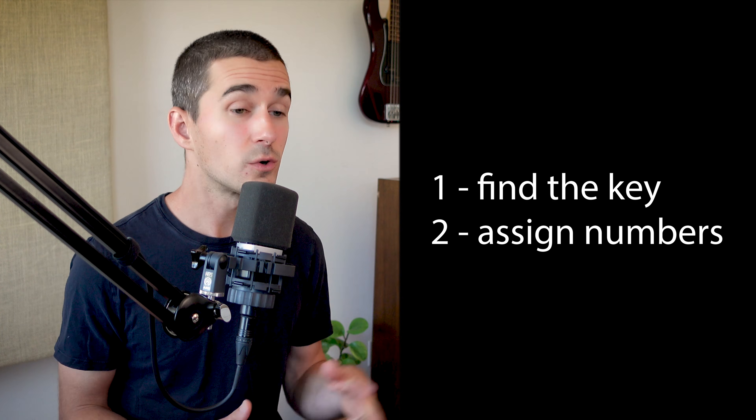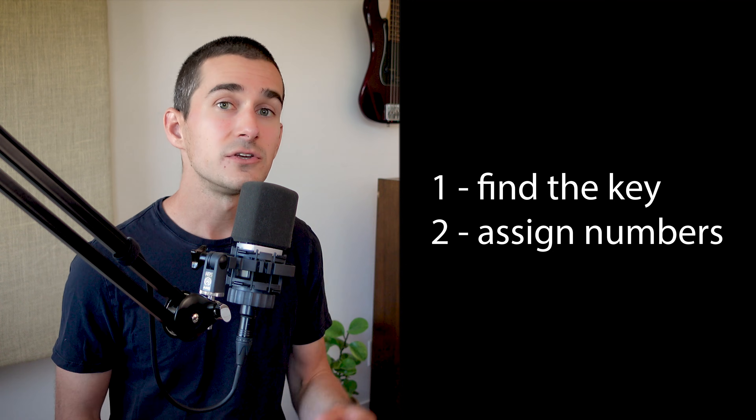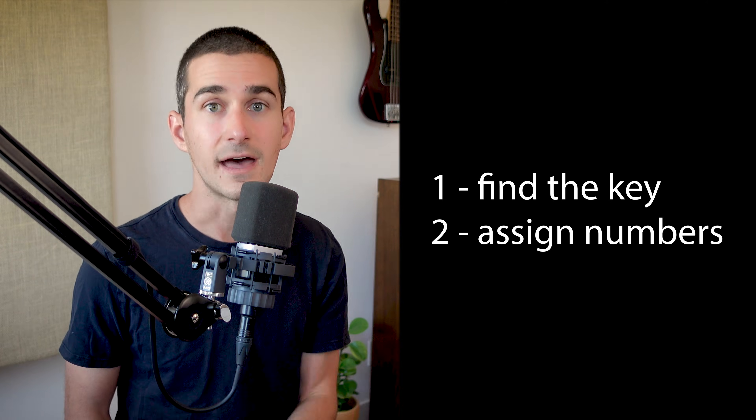One, four, five, and six are by far the most popular chord functions, not only in straight-down-the-middle pop music but really across so many different styles of music. Even with songs that use much more advanced chord functions, you're likely to still see one, four, five, and six used for the majority of the song. You can number a chord progression using the same two steps: determine the key of the song, then assign numbers to the chords based on where their root notes are in that key.